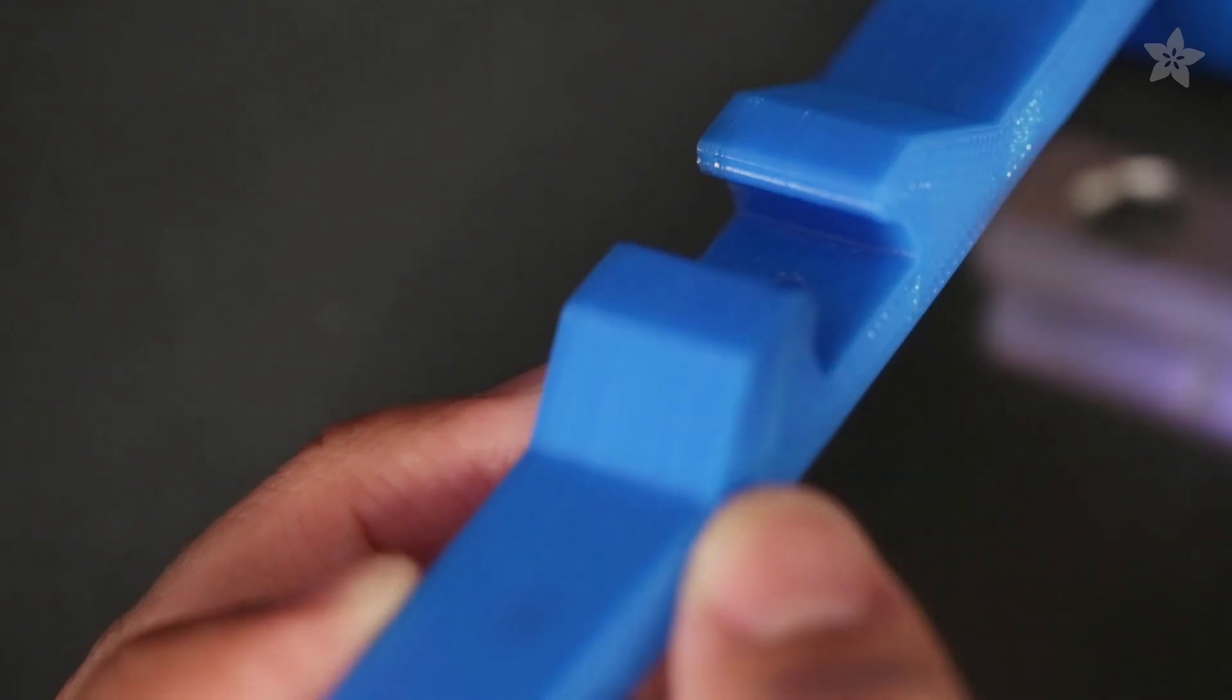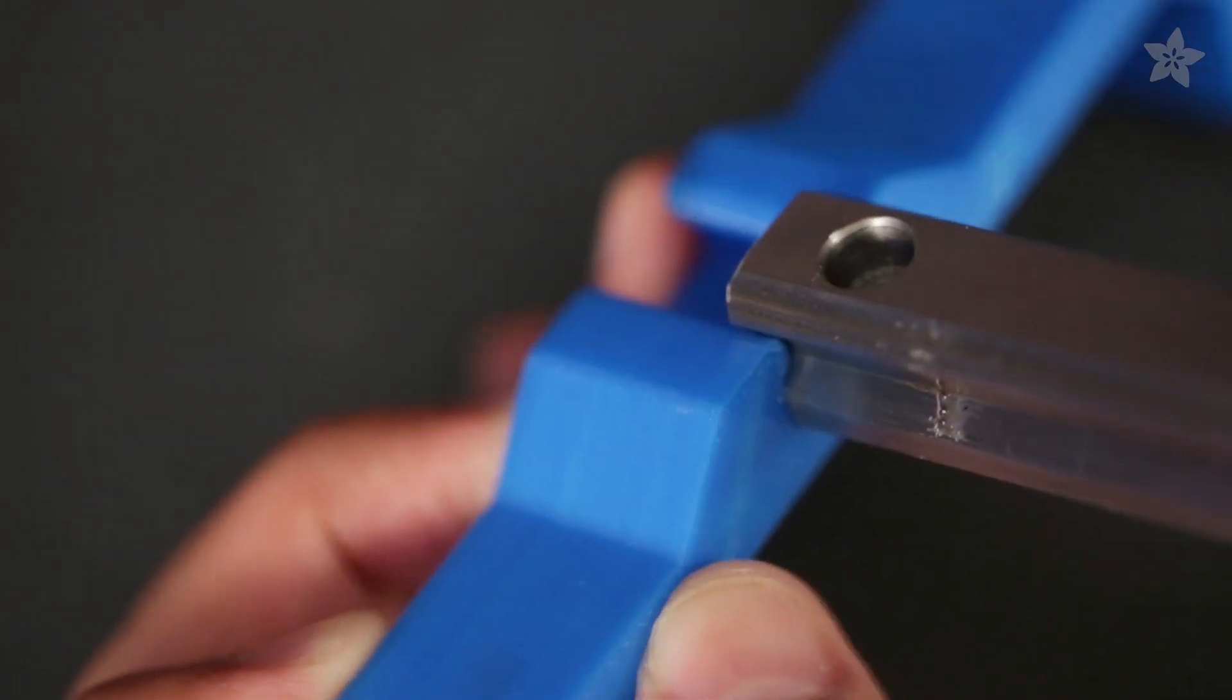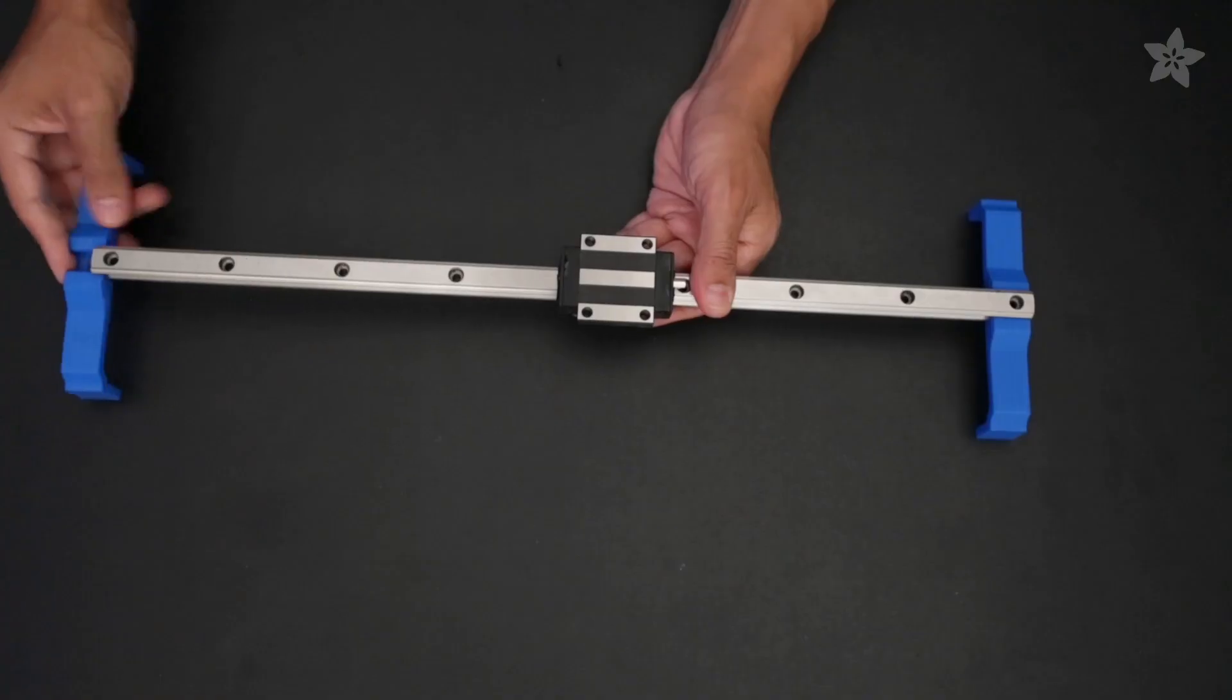The 3D printed feet can be customized to any size. They easily mount to the ends of the railing and are secured with machine screws.